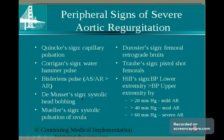Musset's sign is head bobbing. Duroziez's sign is a to-and-fro bruit heard over the femoral. Traube's sign is a pistol shot sound heard if you put the stethoscope on the femoral. Hill's sign is that the blood pressure in the lower extremity is higher than the upper extremity — a difference of 20, 40, or 60 mmHg — indicating severe aortic regurgitation depending on severity.